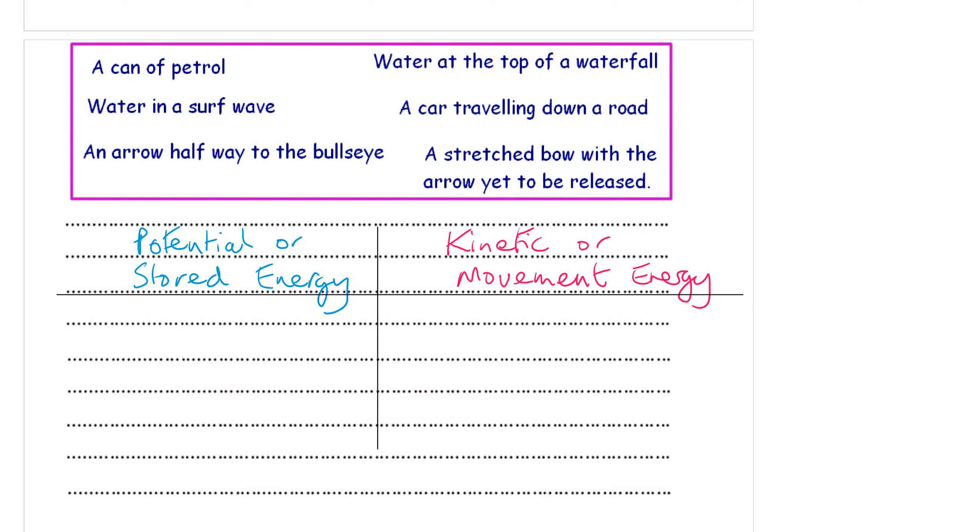A can of petrol has a lot of stored chemical energy, so that's going to go in the left hand column. Water on top of a waterfall has got a lot of stored GPE, gravitational potential energy. A stretched bow with an arrow that has yet to be released has got a lot of stored elastic energy there.